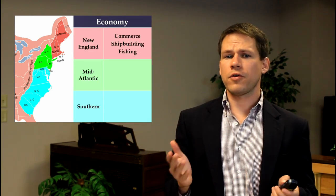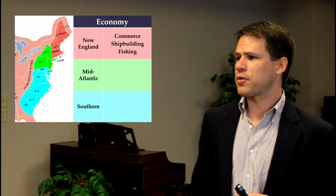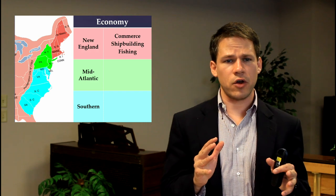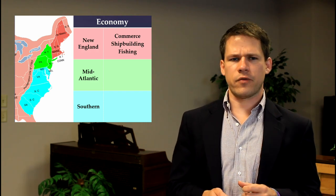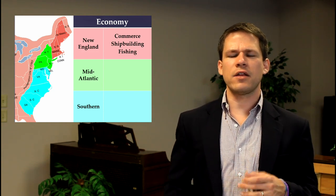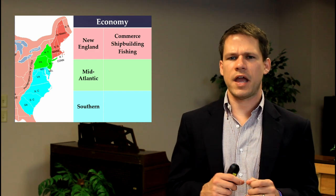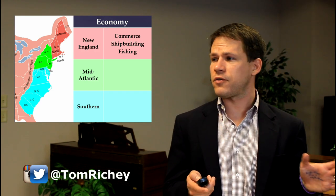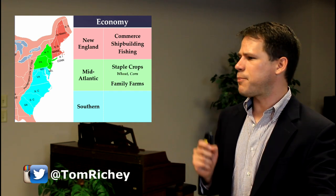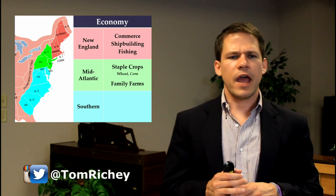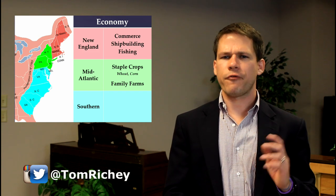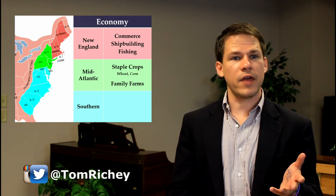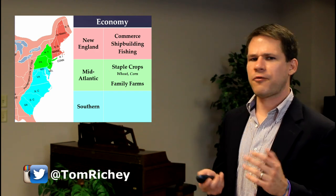Moving on to the economy. New England was kind of an exception — whereas the colonies were predominantly agricultural, New England's share was in commerce: shipbuilding, fishing, and trade. The growing season is pretty short and the soil is rocky. In the mid-Atlantic colonies, you're dealing with staple crops — crops that people eat, like wheat and corn — grown on family farms. Think of even today in Pennsylvania with the Amish and similar groups still operating on that model.